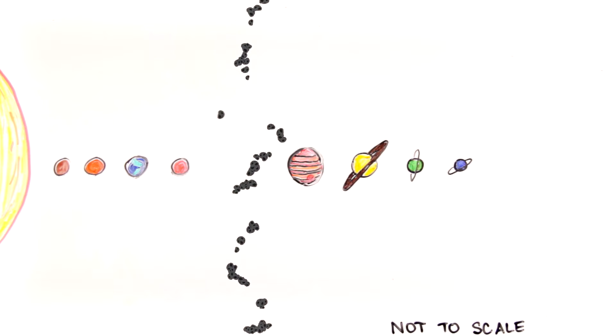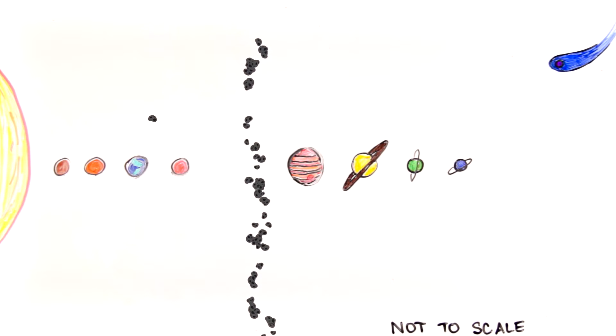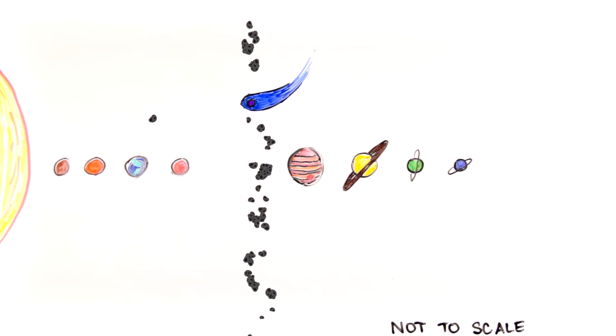Asteroids in the asteroid belt can become near-Earth objects, or asteroids, when planets or collisions perturb them. Just like with asteroids, close encounters with planets or distant stars can send comets careening into the inner solar system.